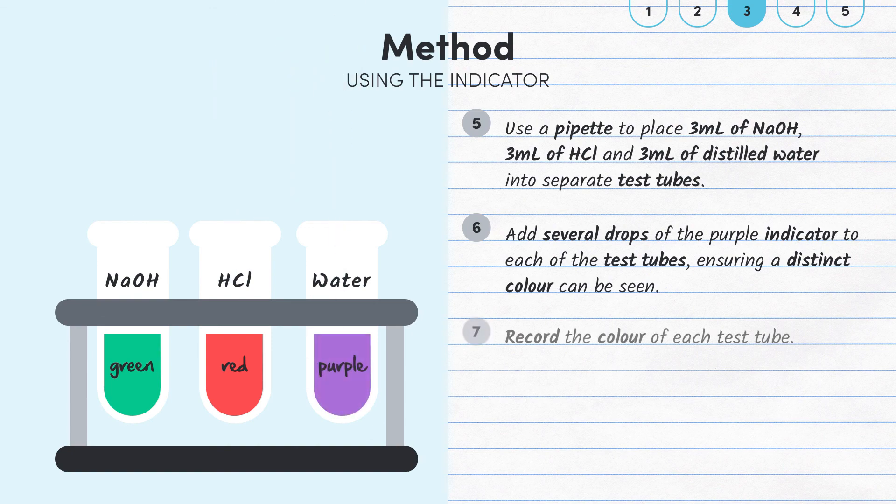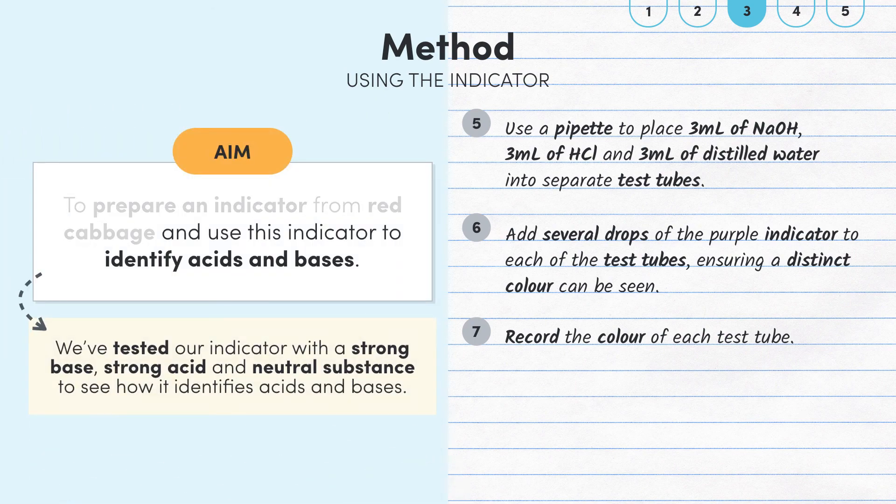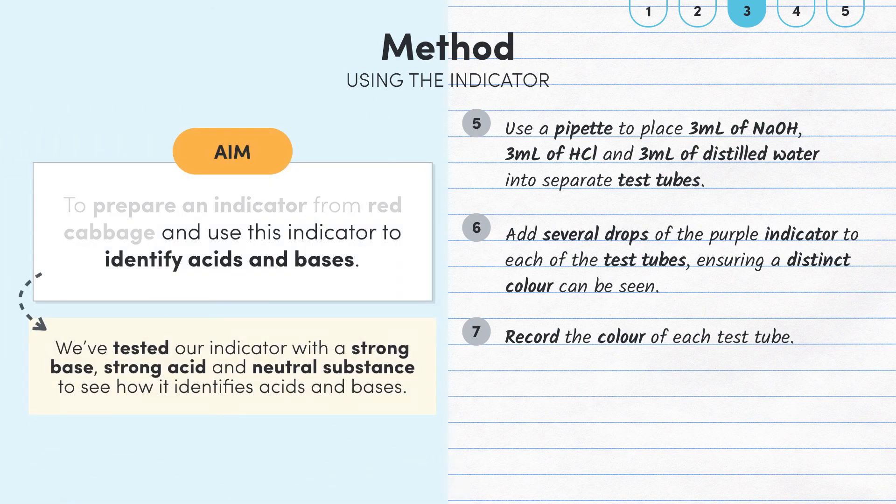Finally, record the colour of each test tube. In these final 3 steps, we're testing how our natural indicator works with a strong base, strong acid and neutral substance to see how our indicator identifies acids and bases.